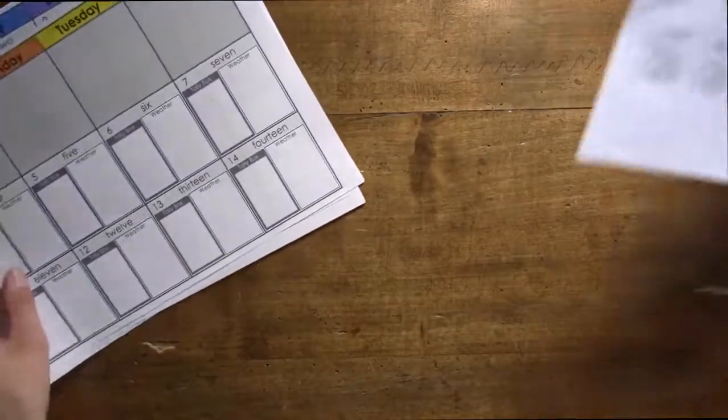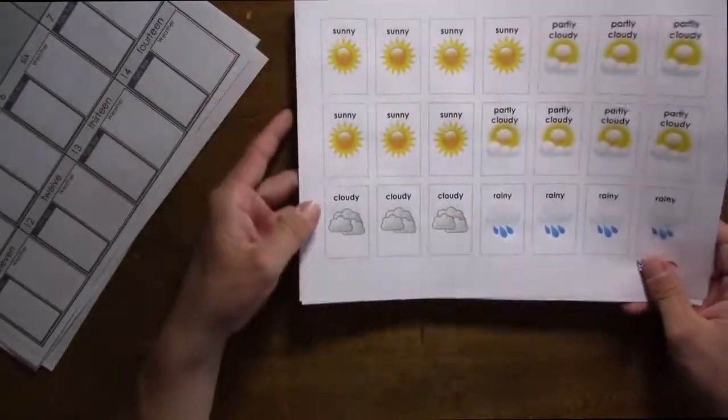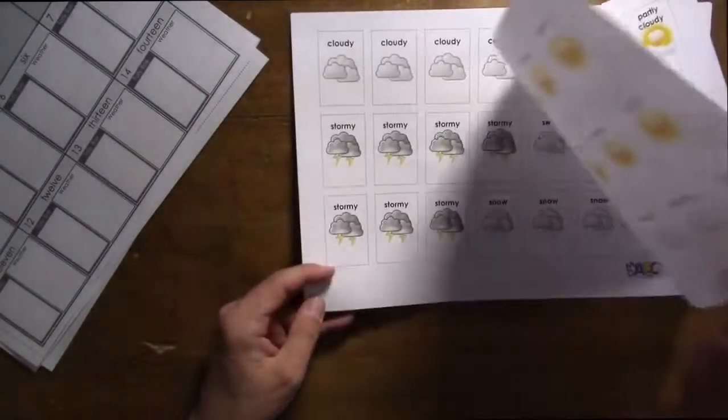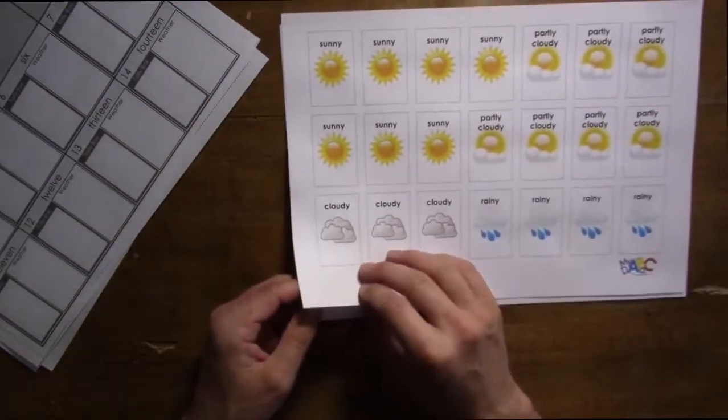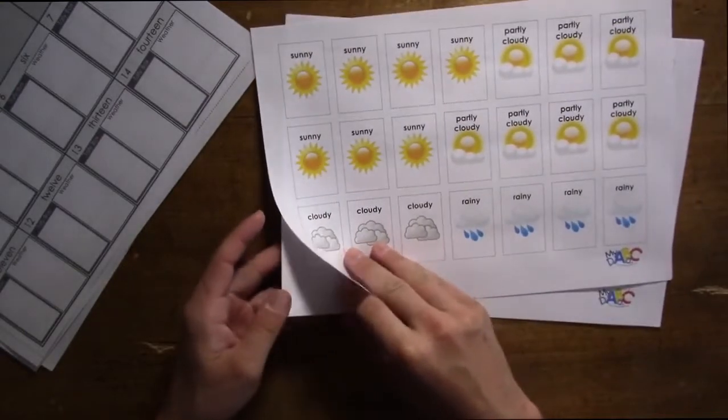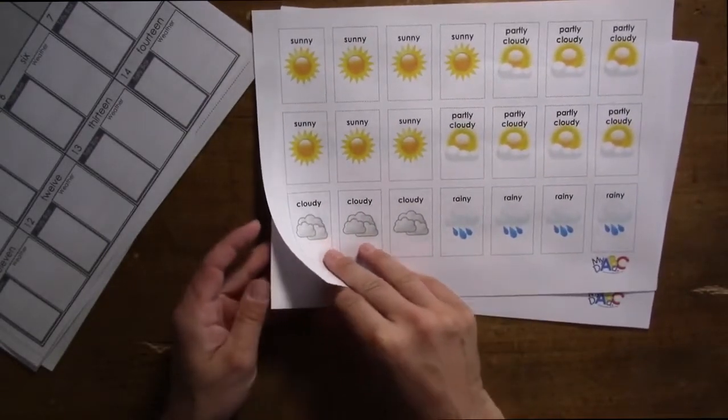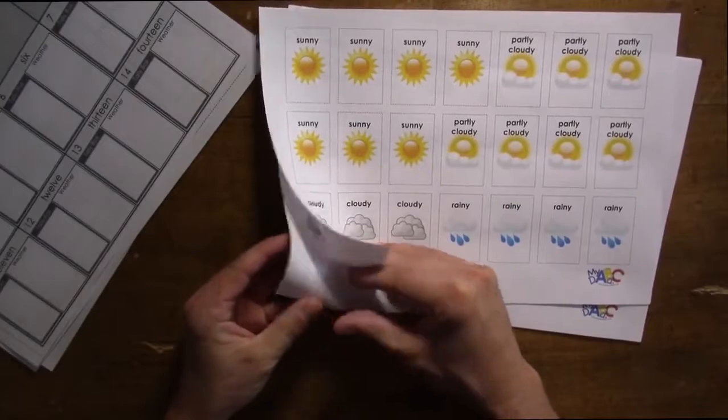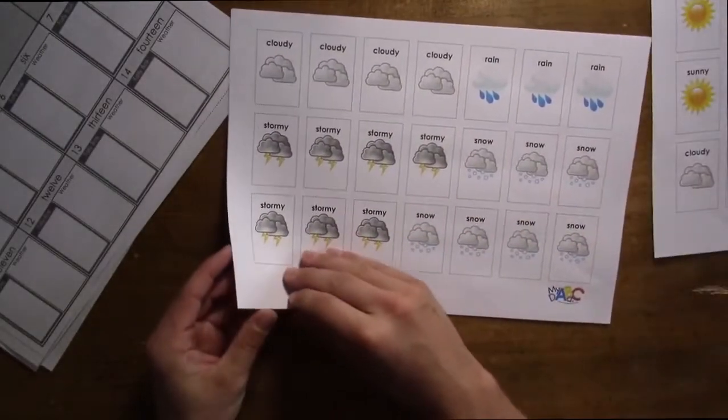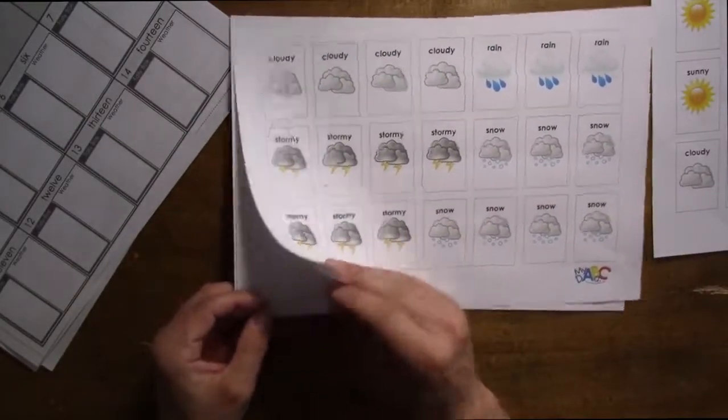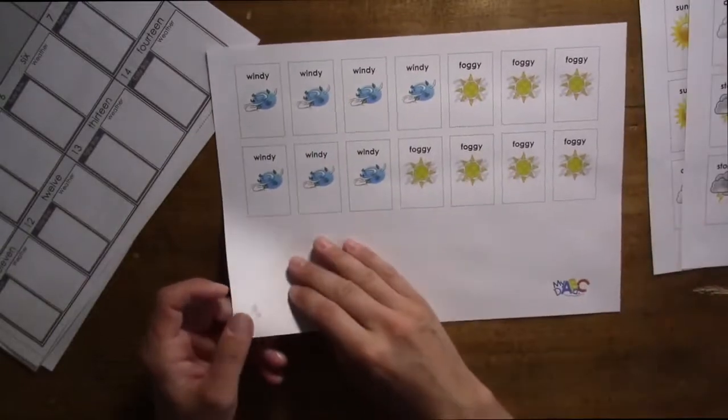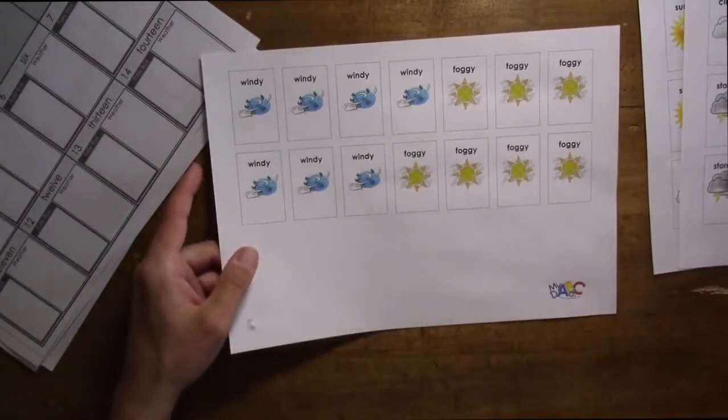And then, to help fill in the calendar, there are a series of weather cards that you can also download. Cards for sunny, partly cloudy conditions, rainy conditions, snow conditions, stormy, foggy conditions, and windy conditions. So, you can download those as well.